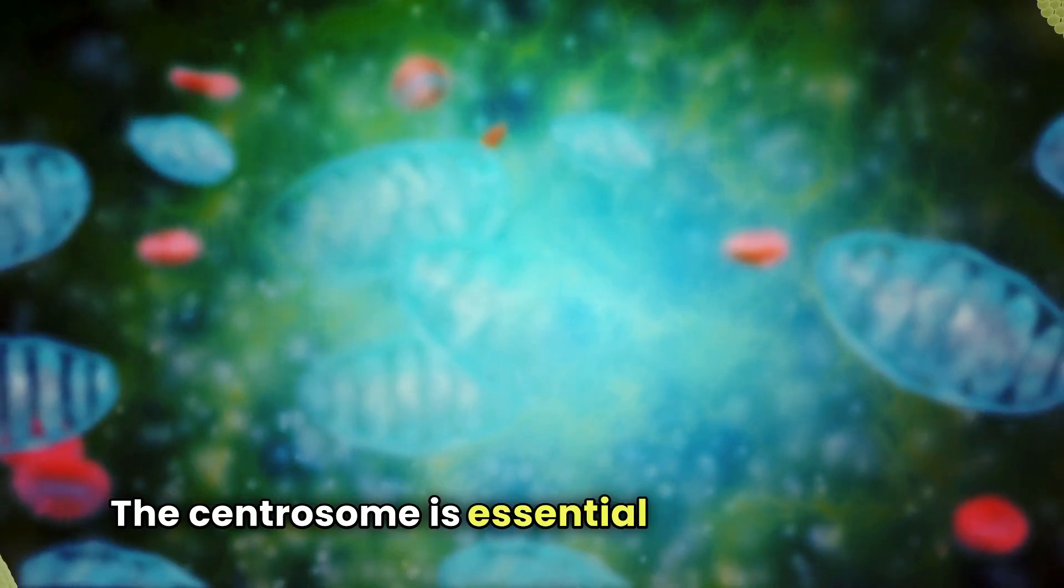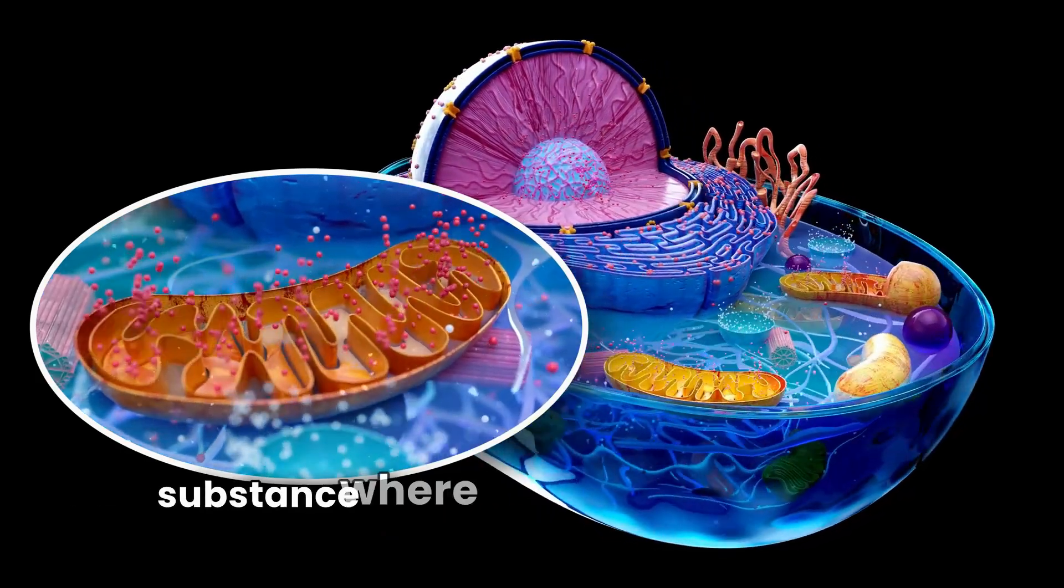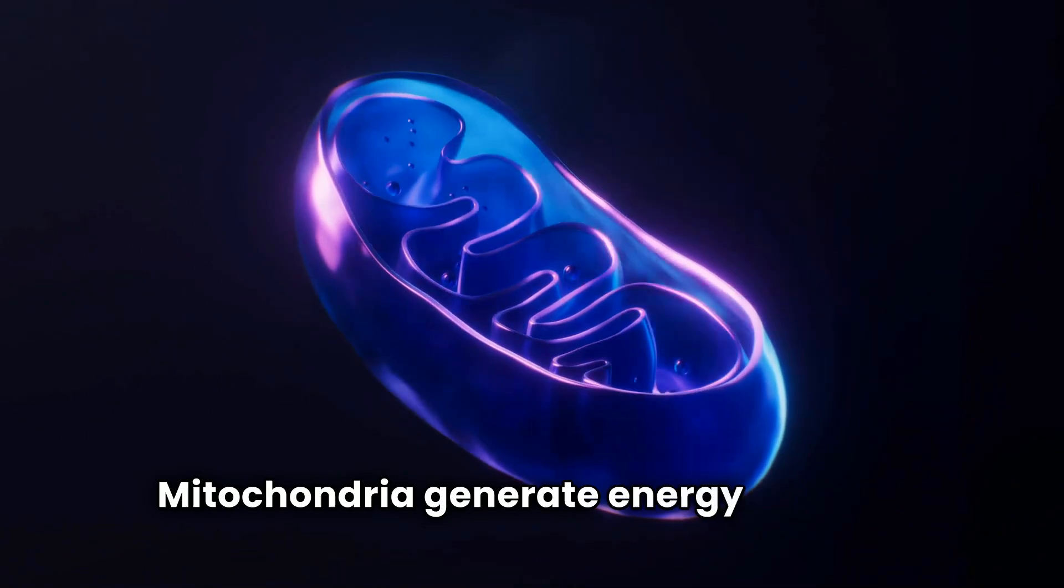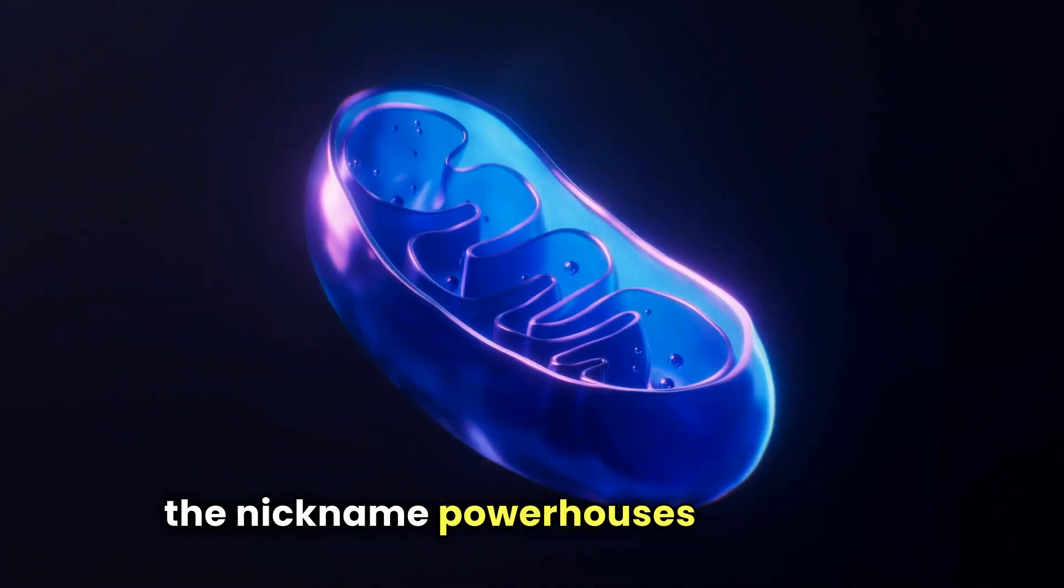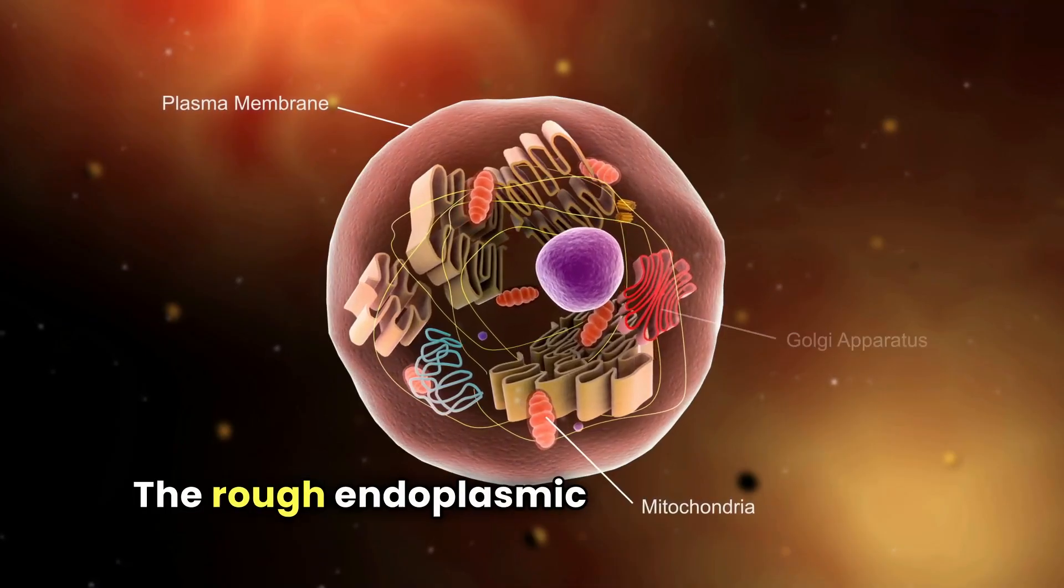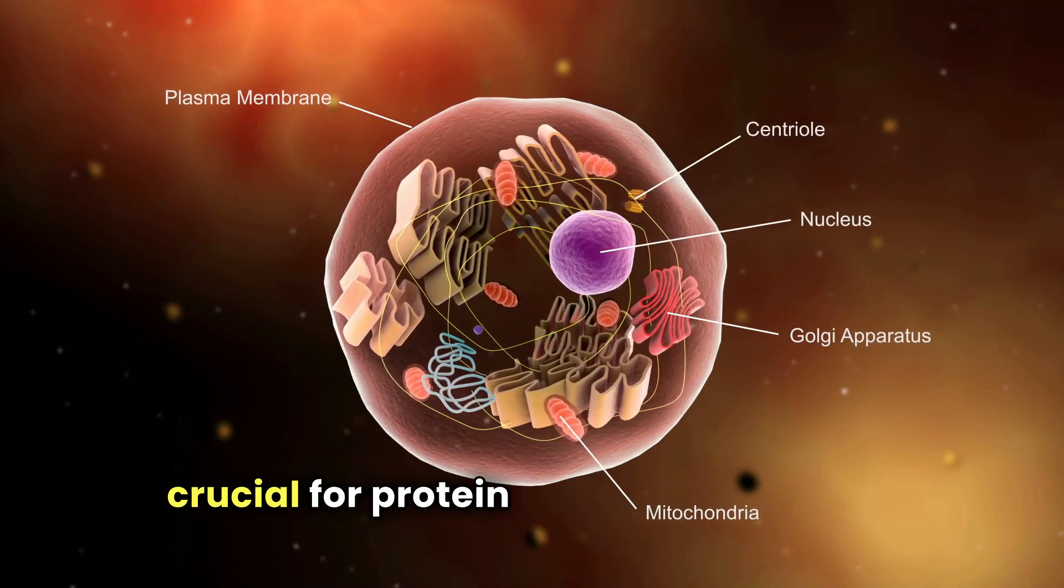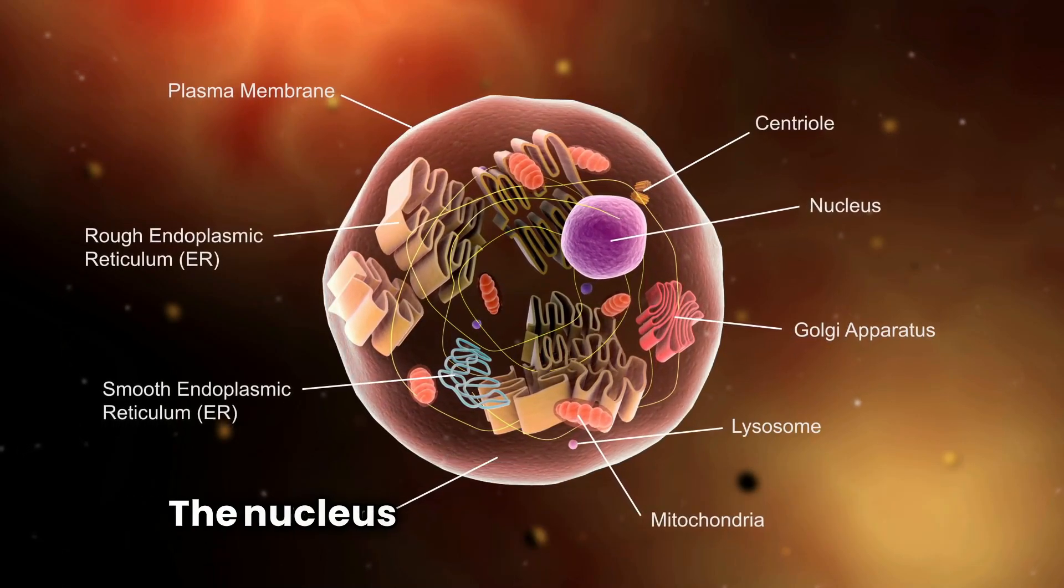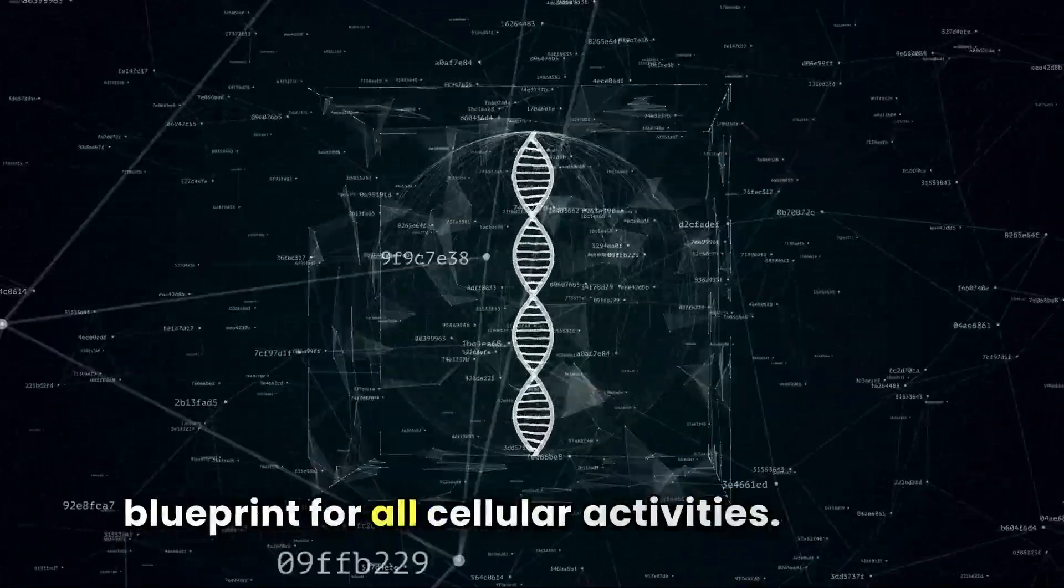The centrosome is essential for cell division. The cytoplasm is the gel-like substance where many vital processes occur. Mitochondria generate energy through cellular respiration, earning the nickname powerhouses of the cell. The rough endoplasmic reticulum ER, with its ribosomes, is crucial for protein synthesis, while the smooth ER is involved in lipid and hormone production. The nucleus houses the cell's DNA, the blueprint for all cellular activities.